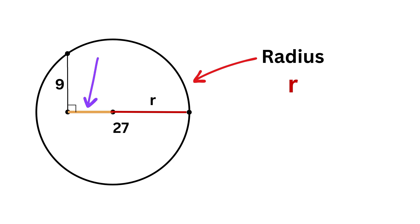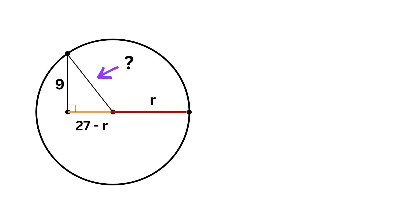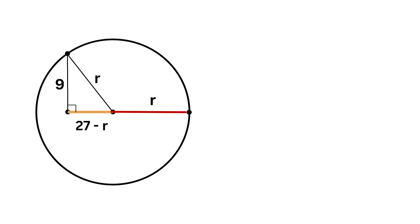Yes, correct. It will be 27 minus r, right? Good. Now connect the center of this circle with this point. What will be the length of this segment? Yeah, you are right. It will also be r.